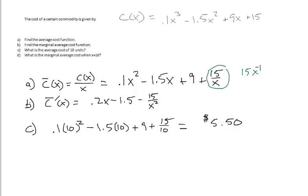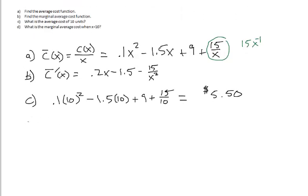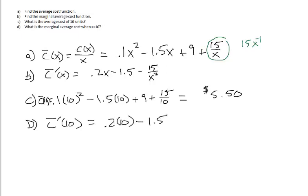Part d asks for the marginal average cost when x = 10. We take our marginal average cost function and input 10. So c̄'(10) = 0.2(10) - 1.5 - 15/(10²). When we calculate that, we get $1.35.